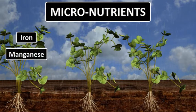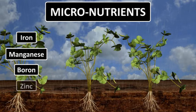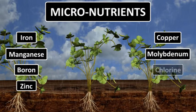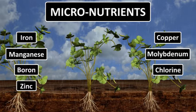Iron, manganese, boron, zinc, copper, molybdenum, and chlorine are called micronutrients. Deficiency of these nutrients affects reproduction, growth, susceptibility to diseases, and crop yield in plants. To increase the yield, the soil is enriched by supplying these nutrients in the form of manure and fertilizers.